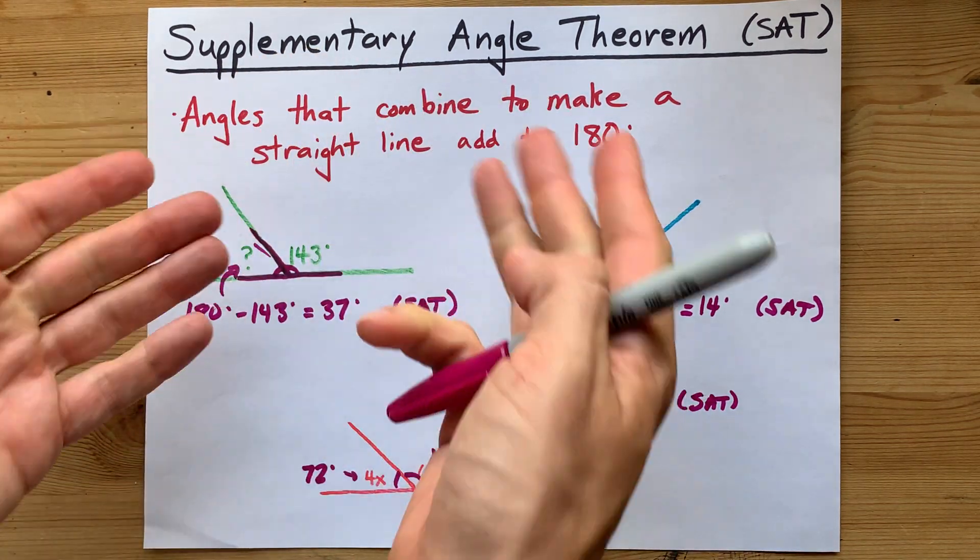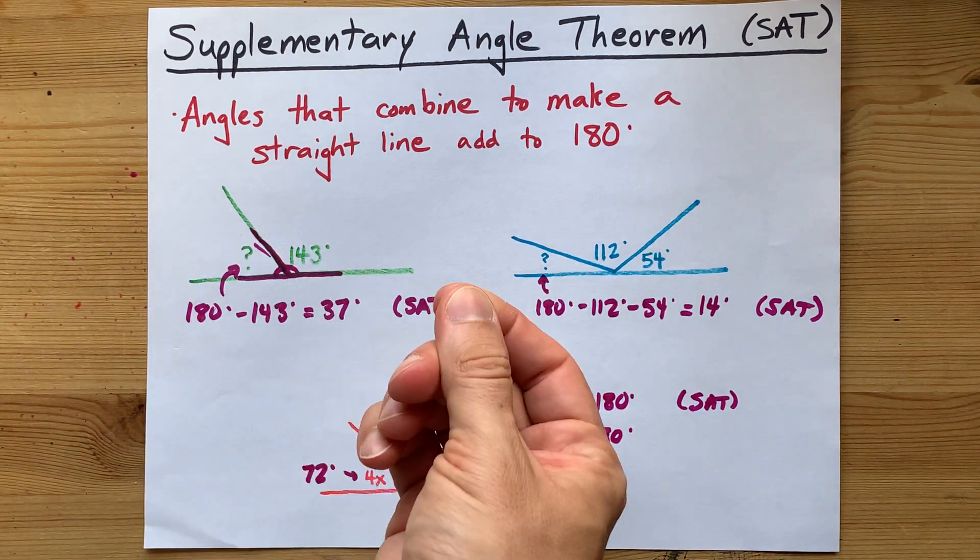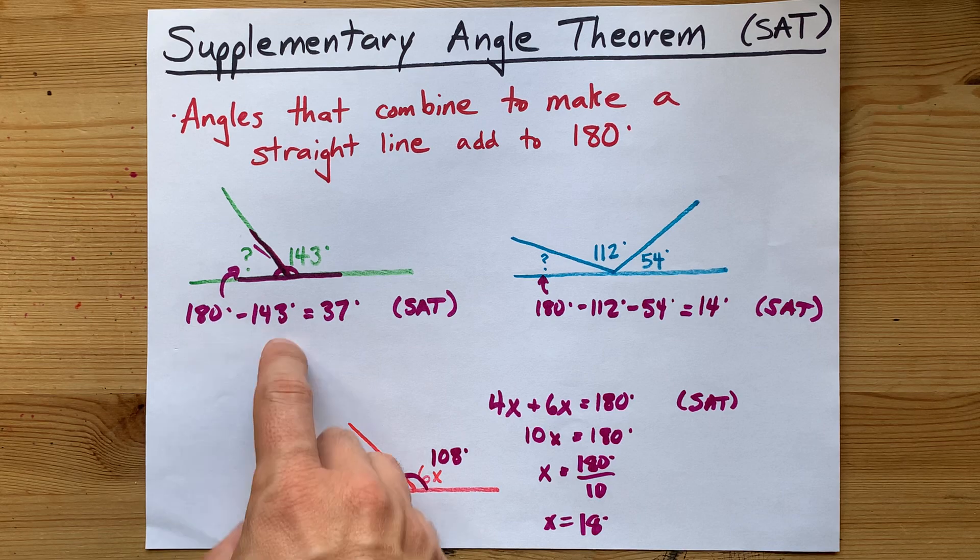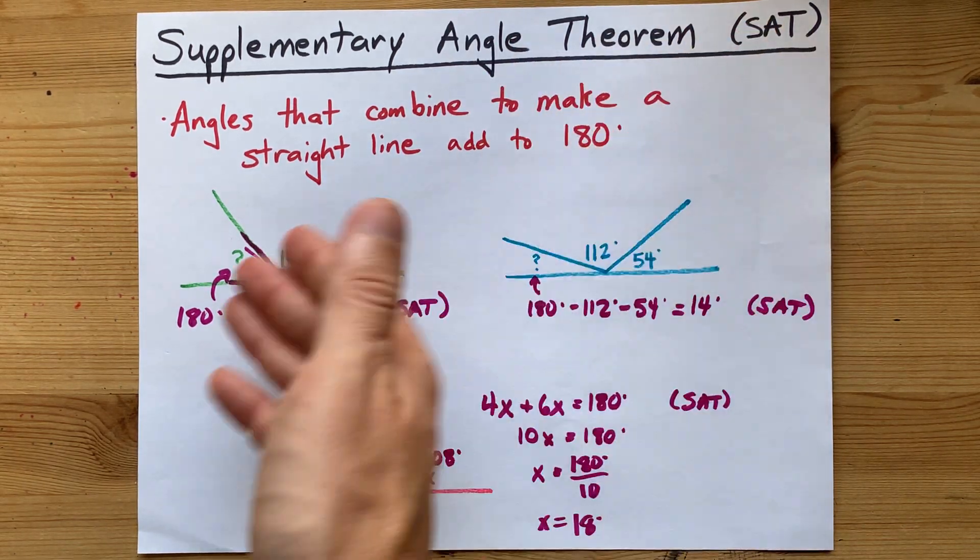That's what supplementary angles are all about. If you ever have two angles that combine to make a straight line and you use that fact, the fact that they add to 180, you have to cite SAT in your answers.